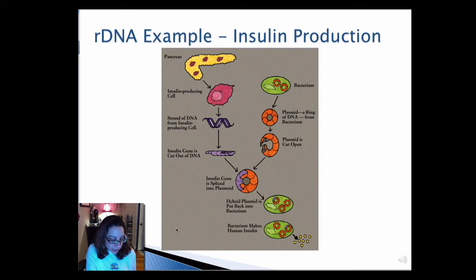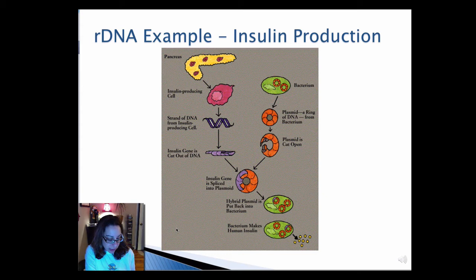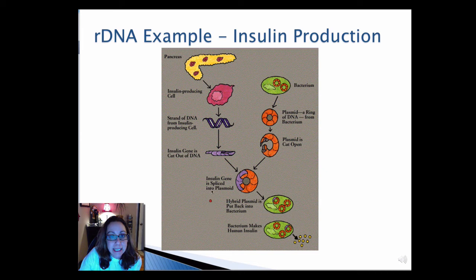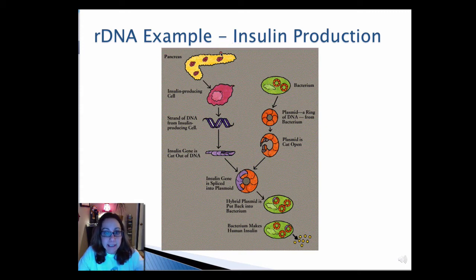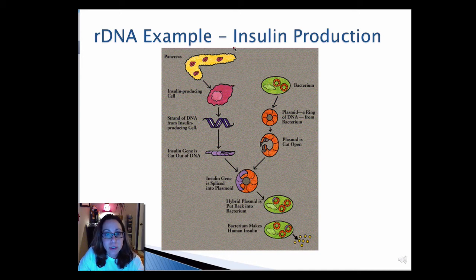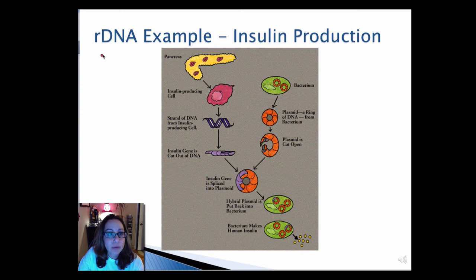Now we can use these types of technology, the phage and the plasmids, our recombinant DNA technology, to use it for gene therapy. So how do we use this for gene therapy? One example is we can make insulin. And by making insulin, we can use this insulin to treat patients with diabetes. So how do we use recombinant DNA technology to make insulin?